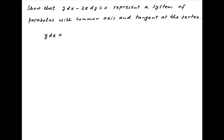The given differential equation can be written as y dx is equal to 2x times dy. Separating the variables, we get dx upon x is equal to 2 times dy upon y.